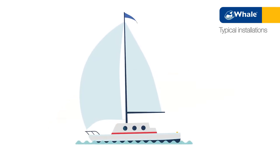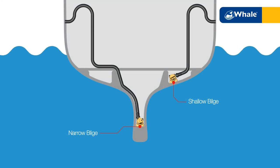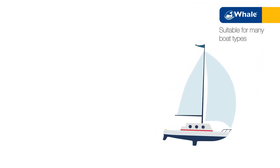For sailboats, the small footprint is designed to fit neatly into both shallow and narrow keels typical in deep keel vessels. SuperSubSmart is the ideal pump for many powerboat and sailboat installations.